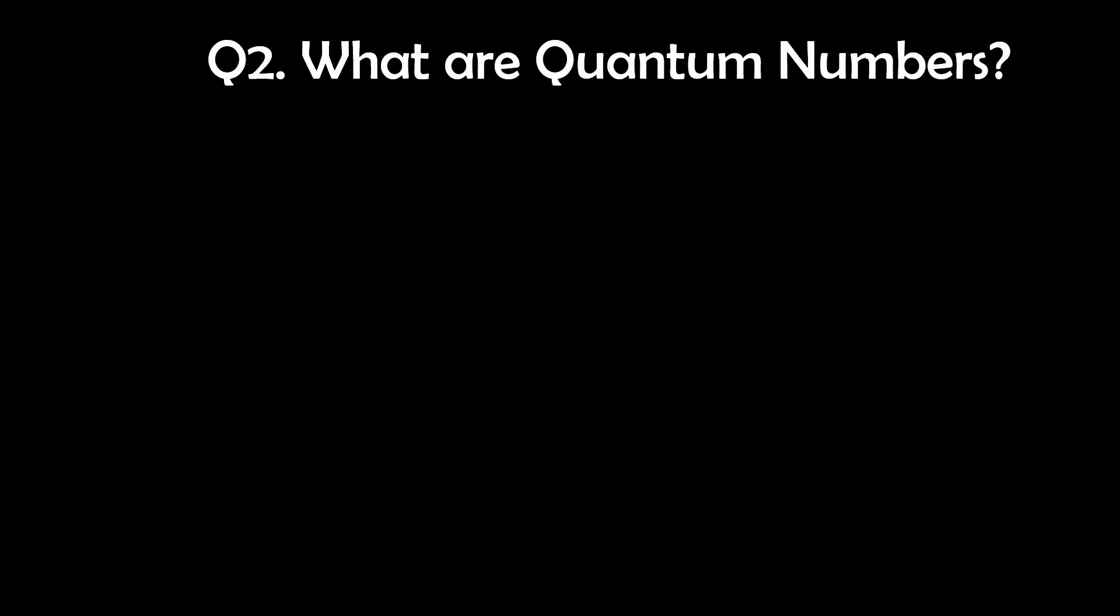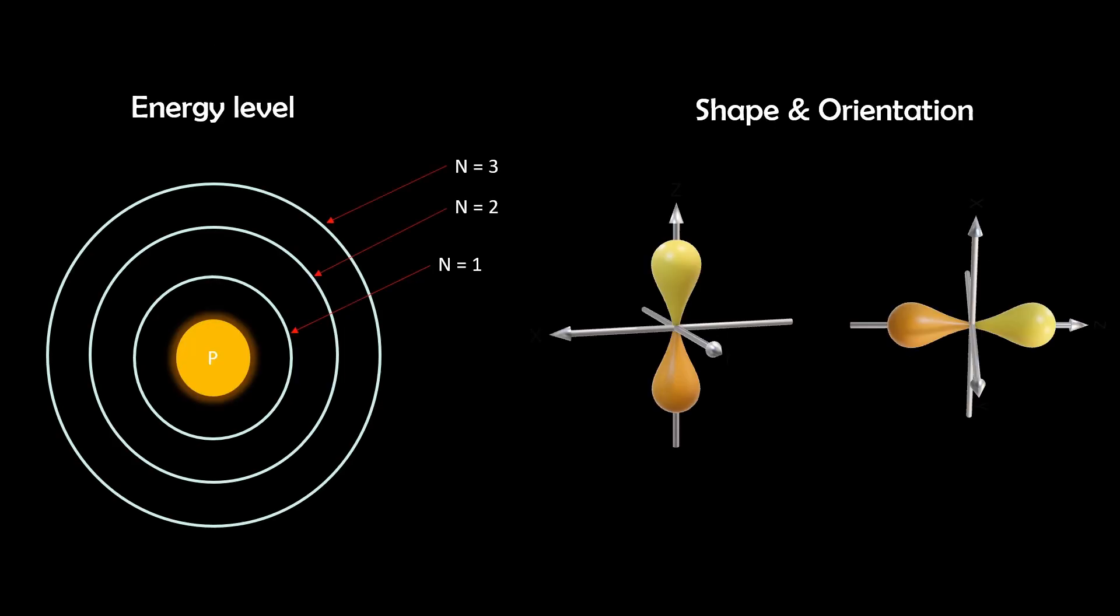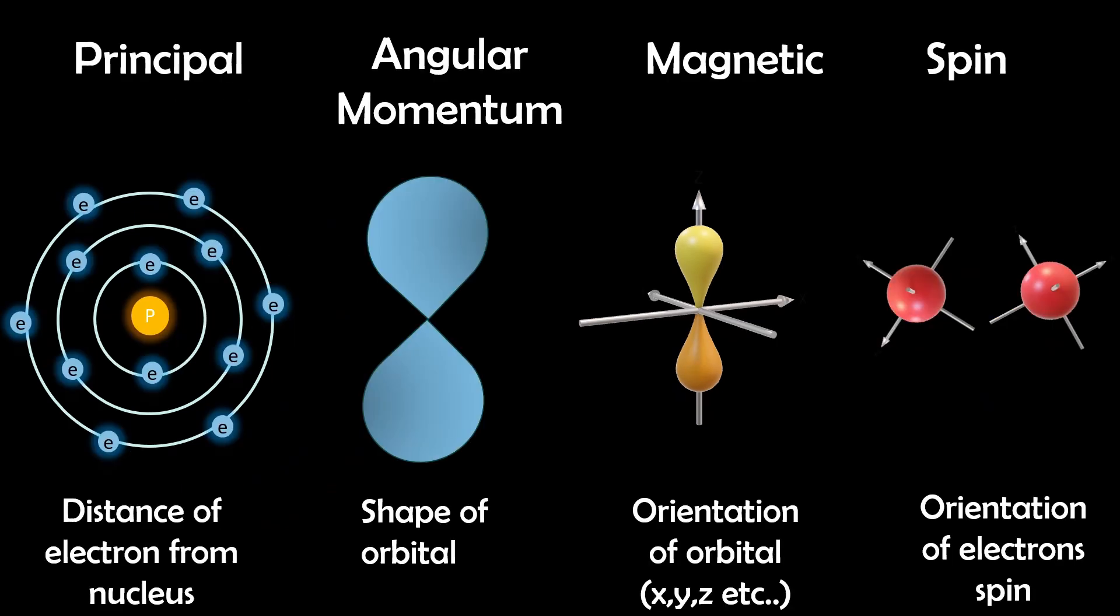Question 2. What are quantum numbers? Quantum numbers are a set of numerical values that provide important information about the electrons in an atom. They describe characteristics like energy level, shape and orientation of an orbital, and the spin of an electron. There are 4 types of quantum numbers: Principle (N), Angular momentum (L), Magnetic (M sub L), and spin (M sub S).